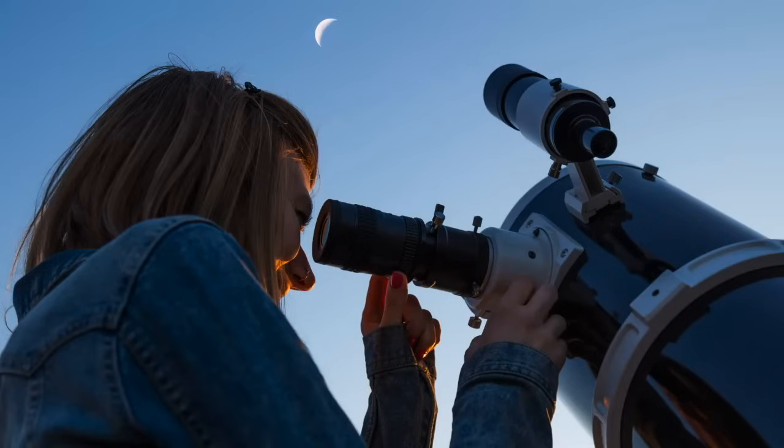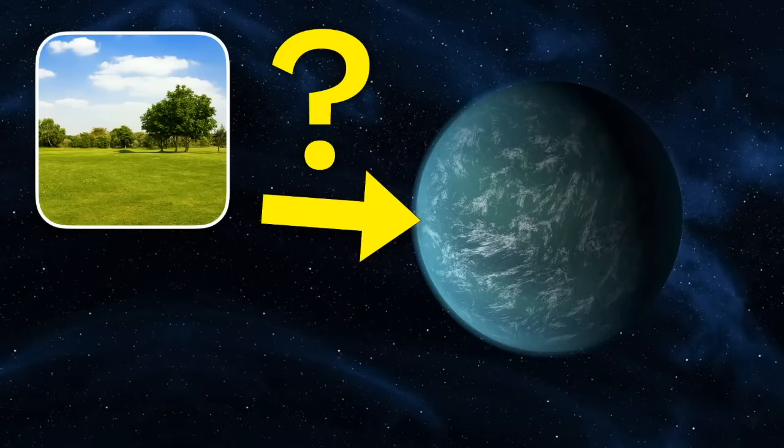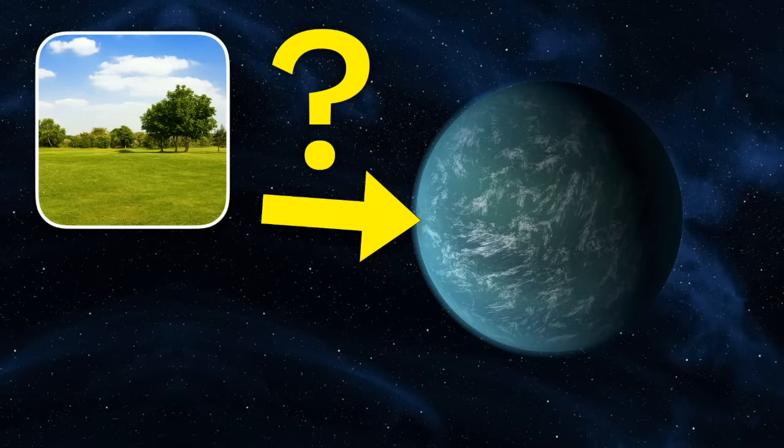But scientists are hunting for it. As of now, scientists have found over 50 planets orbiting around other stars in the stars' Goldilocks zones. Who knows? Maybe life exists on one of these planets, waiting to be discovered by a future scientist, like you.